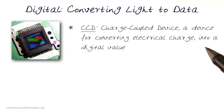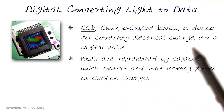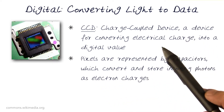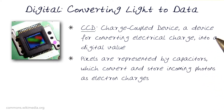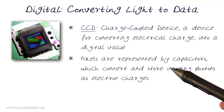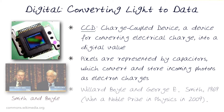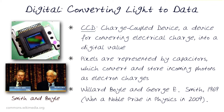It's an electronic device that basically converts electrical charges into a digital value. A pixel on the output from the charged couple device, or CCD, is basically different capacitors which convert and store incoming photons as electron charges. Photons have photoelectric value, and once they hit these capacitors, they are converted into electron charges, and it's this electron charge which is stored and given a digital value.